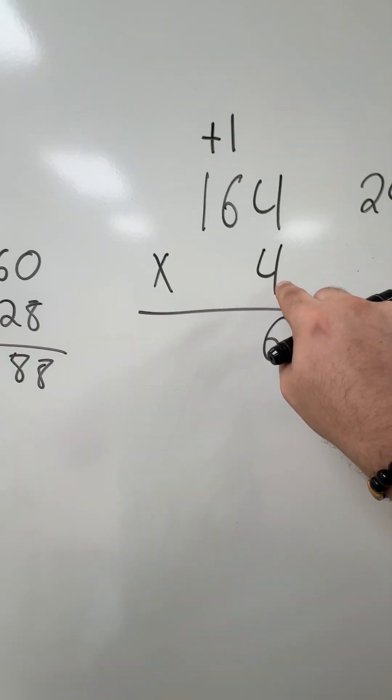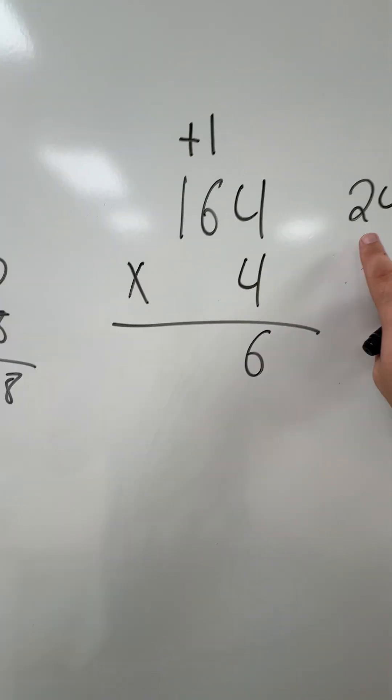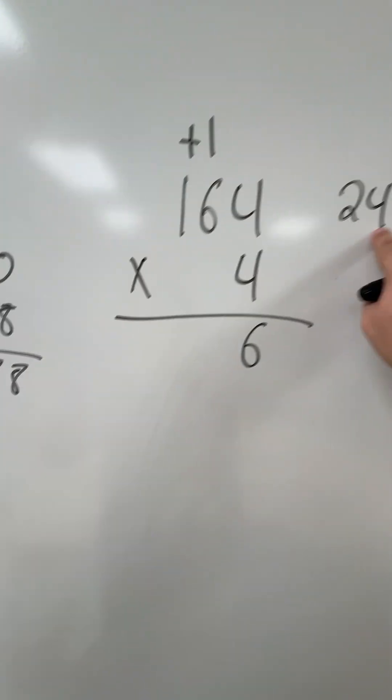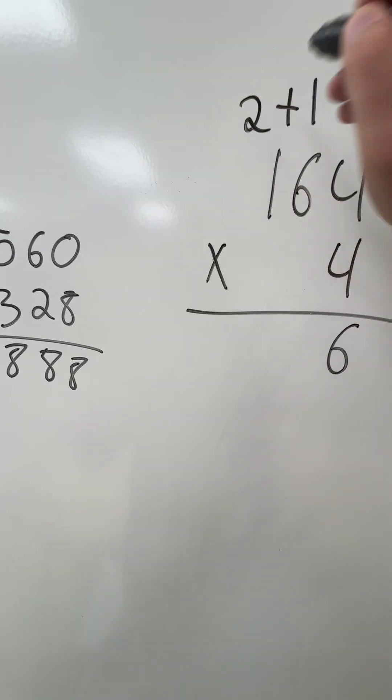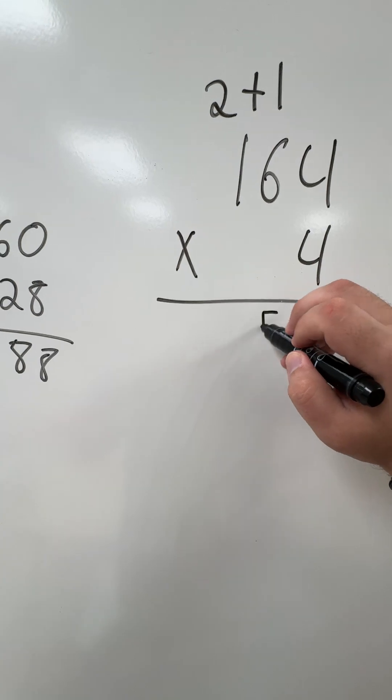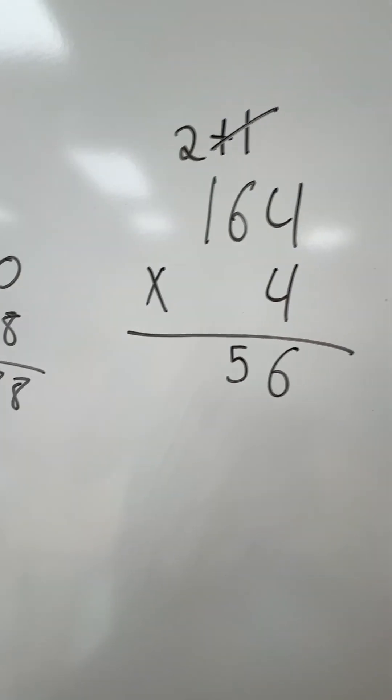So for this column, I have 4 times 6 is 24, plus the 1 is going to be 25. I carry the 2, I drop the 5, cross out the 1 so we don't have to use it again.